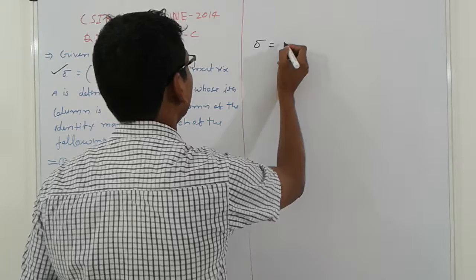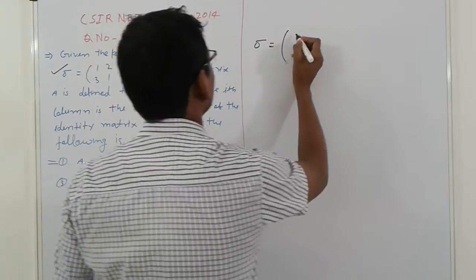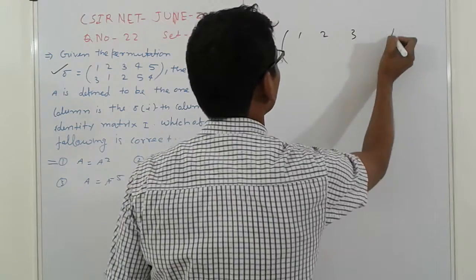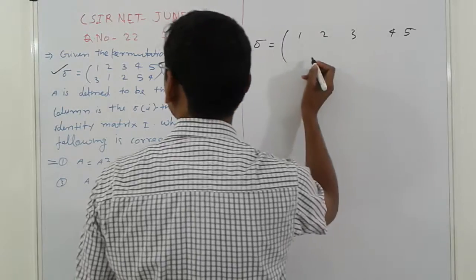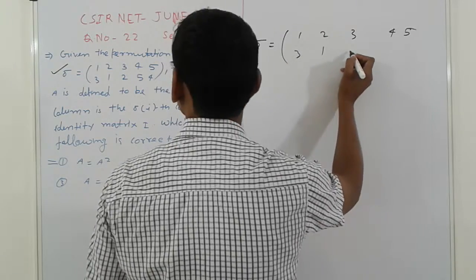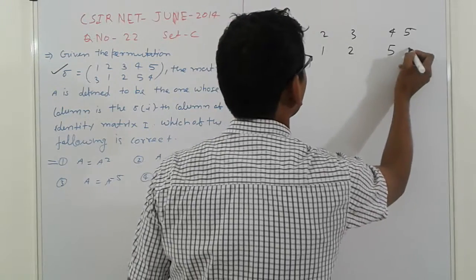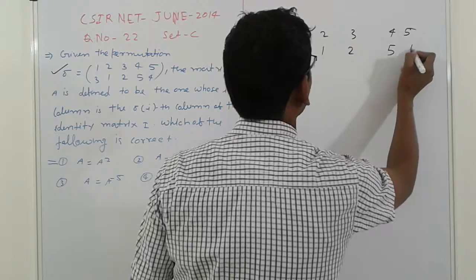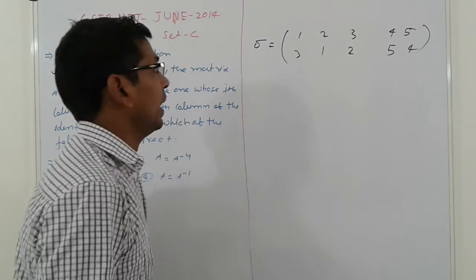Here, sigma is given. That is 1, 2, 3, 4, 5. And here, 3, 1, 2, 5, 4. We will convert into disjoint cycles.